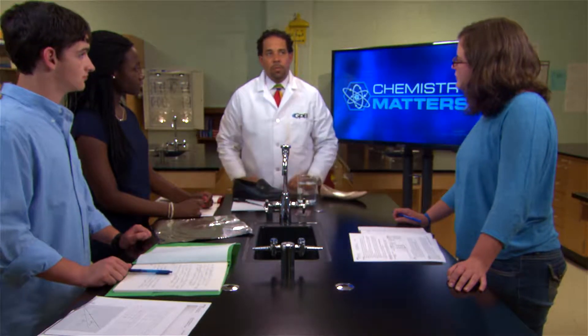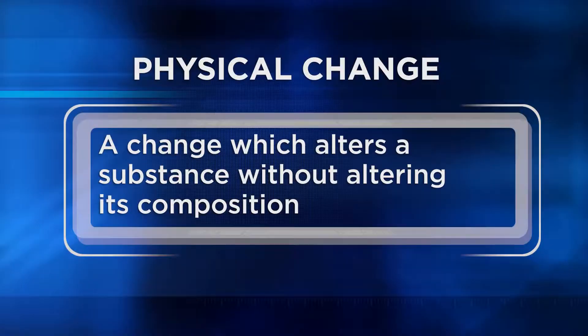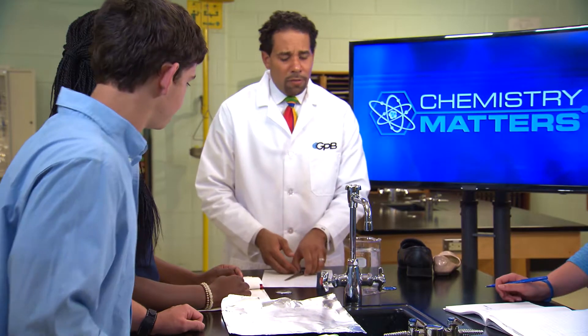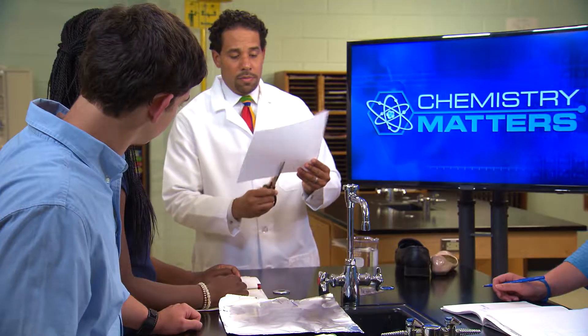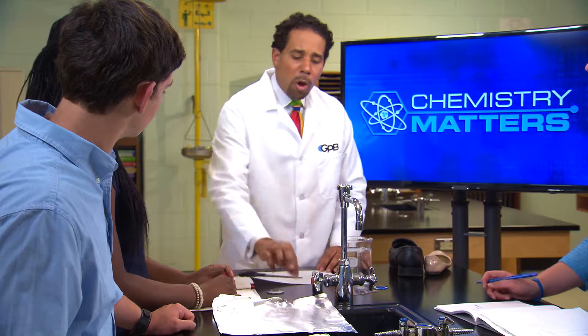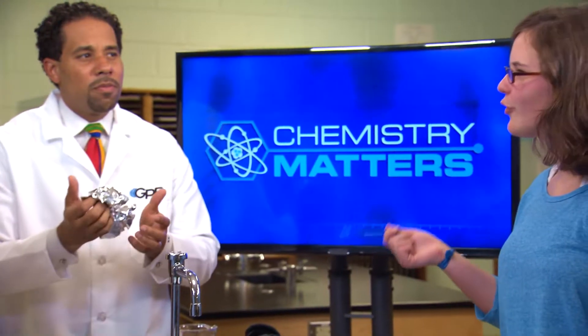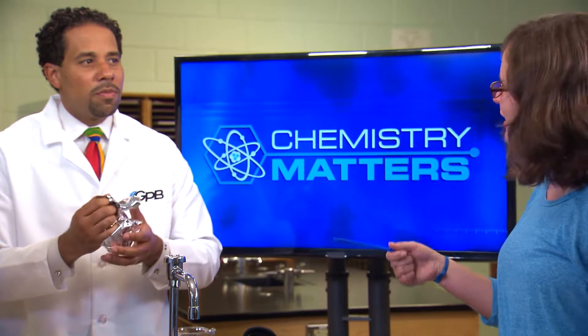Now that we know about physical properties, any time a physical property changes, we call that a physical change. A physical change is a change that alters a substance without altering its composition. For example, breaking glass, crushing salt, flattening out metal — those are physical changes. And of course cutting paper. What about balling up aluminum foil? Physical change, because aluminum foil is malleable and can change shape easily.